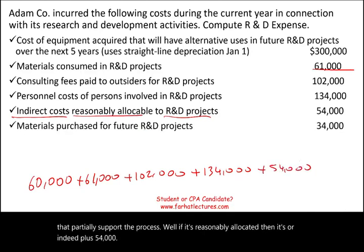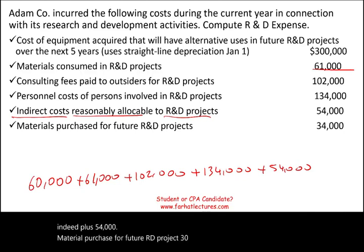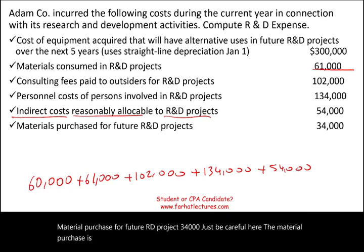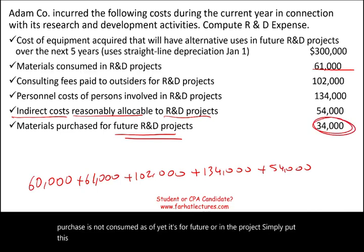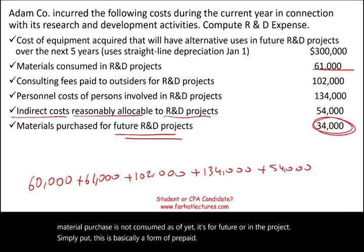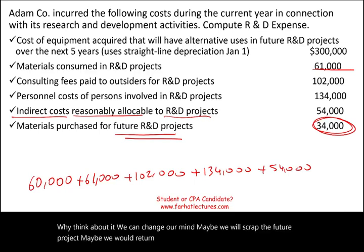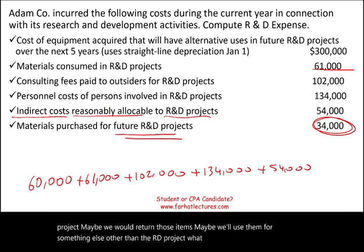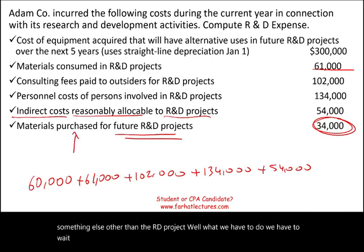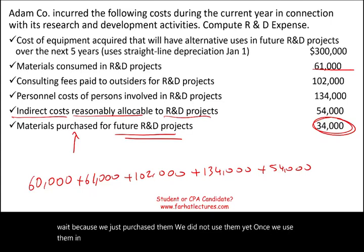Material purchased for a future R&D project: $34,000. Just be careful here. The material purchased is not consumed as of yet — it's for a future R&D project. This is basically a form of prepaid. Think about it: we can change our mind. Maybe we will scrap the future project, maybe we would return those items, or maybe we'll use them for something else other than the R&D project. We have to wait because we just purchased them and did not use them yet. Once we use them in the R&D project, we will expense them.